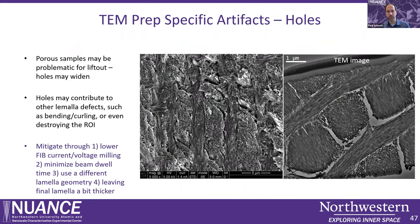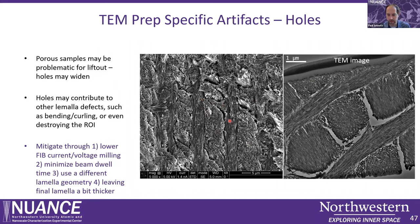The last artifact is holes in your TEM lamella. With porous samples, pores can become wider during TEM thinning, leading to other artifacts such as bending, curling, or completely destroying the region of interest. For example, in a mouse enamel sample with crystallites oriented in bundles, there is a huge amount of porosity. I left the sample slightly thicker than 100 nanometers because going thinner would cause it to completely disintegrate. Sometimes leaving a sample a little bit thicker can actually be advantageous.